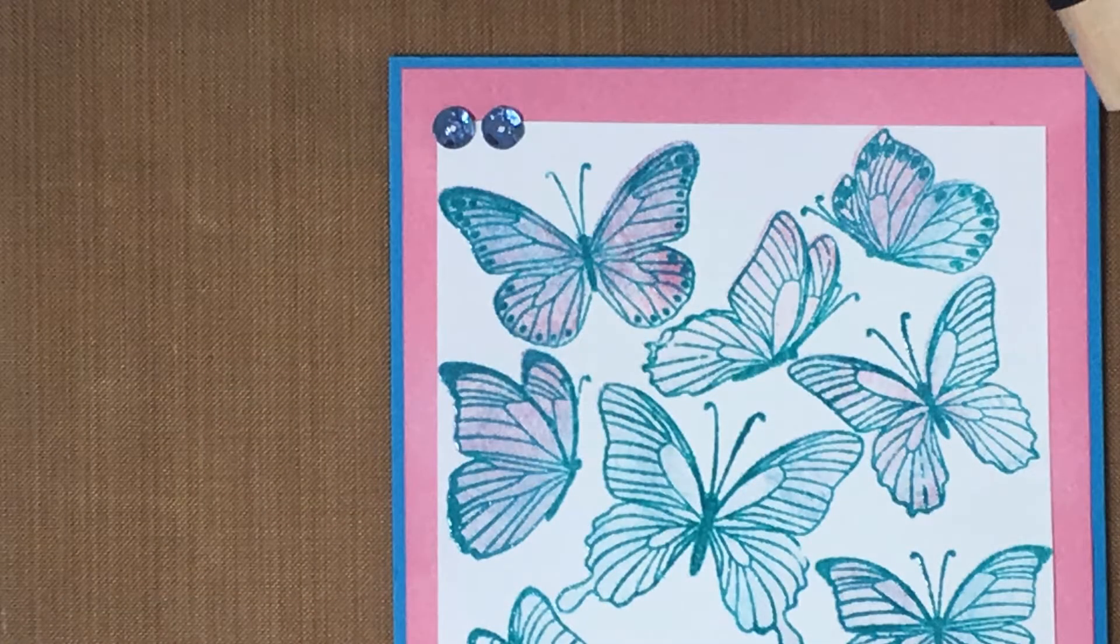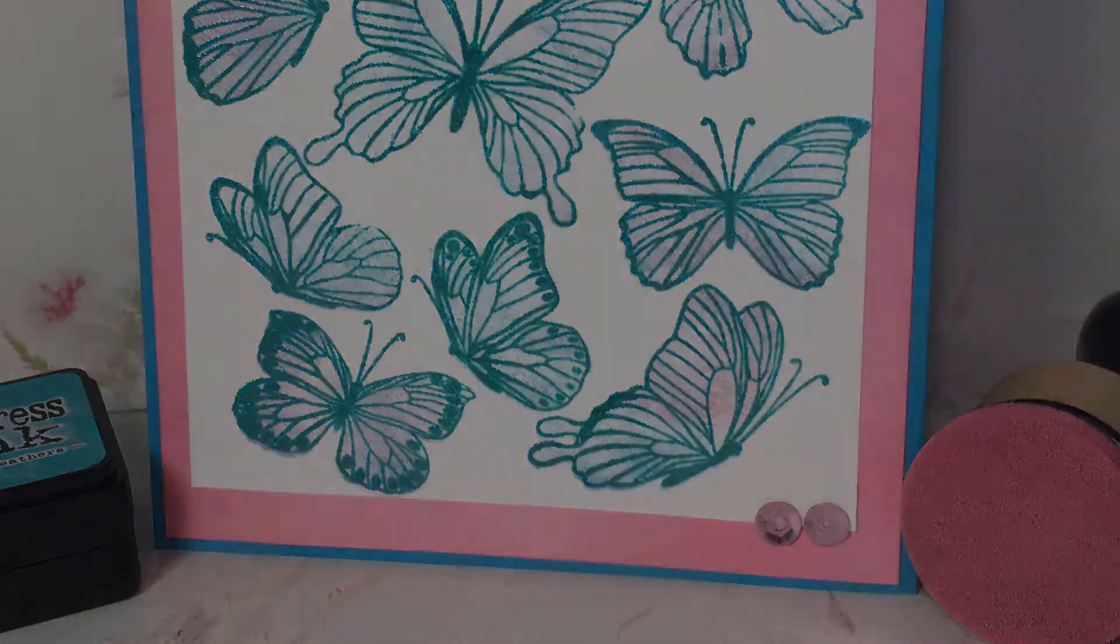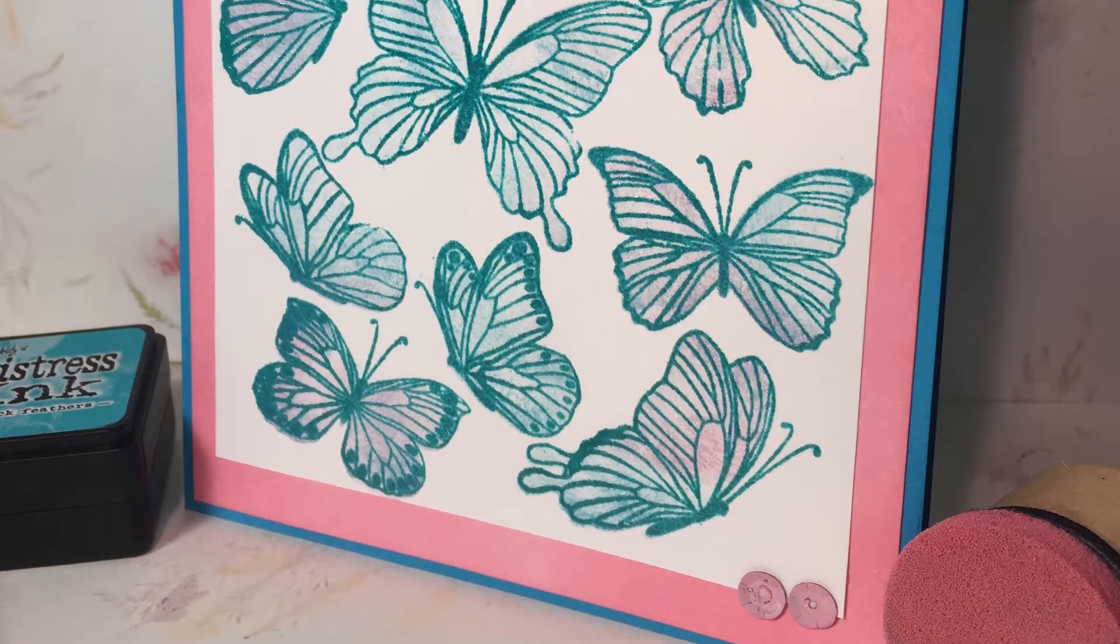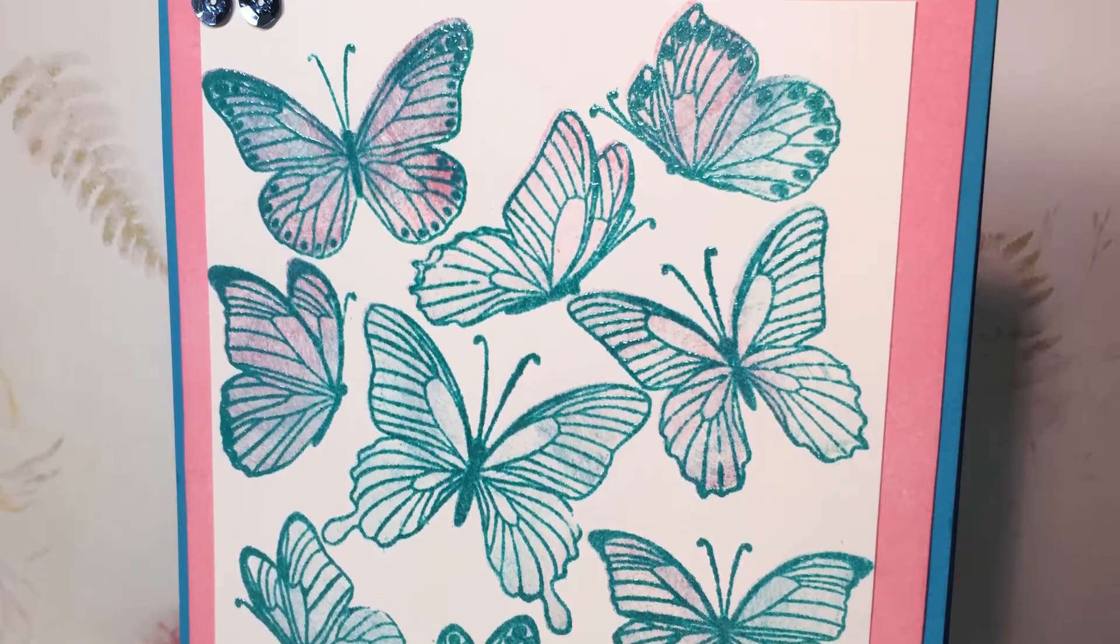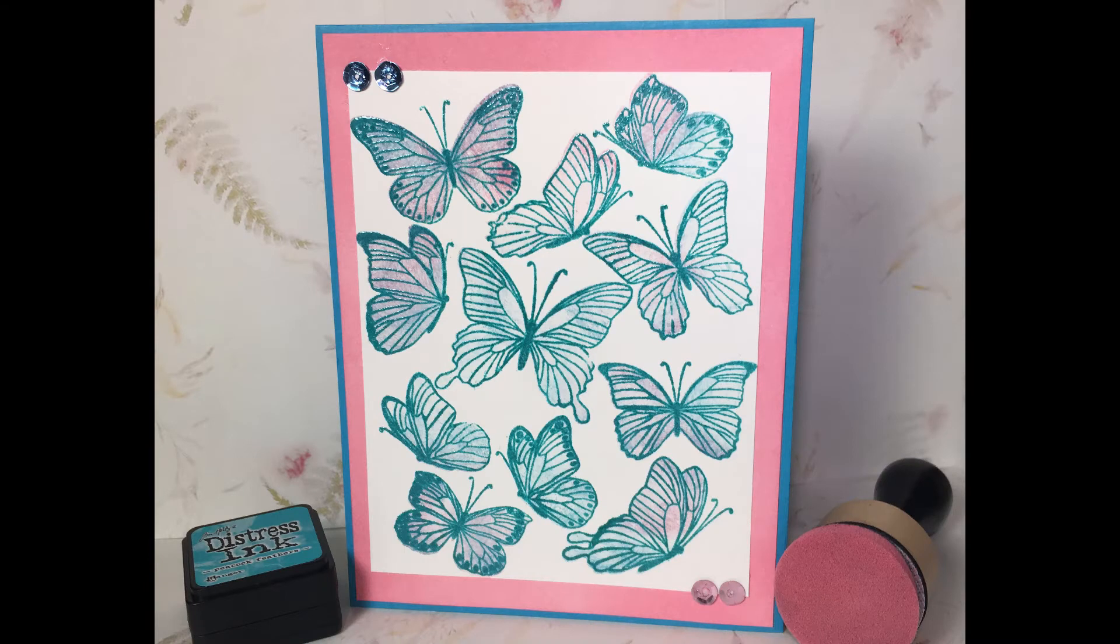So there you have it. That is the finished card. I really liked the way this came out. It was really quick and easy and I like the effect that it gave with adding the distress oxides to the stamps with the blending tools. So there you have it folks. There is today's card.